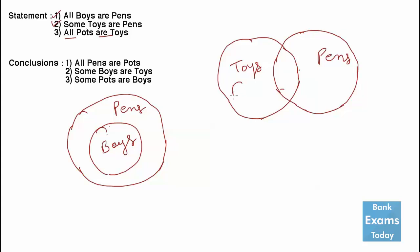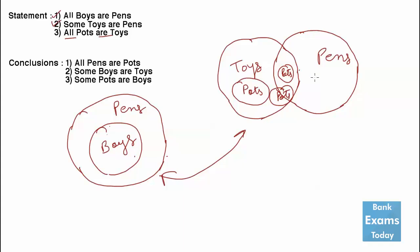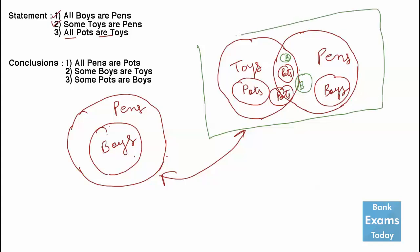The third statement: all pots are toys. So there is a possibility that the pot circle is here, or it can be here, or it can be like this. So we join these two diagrams — boys can be here, or the circle boys can be here, or it can overlap. This is the final integrated diagram for all three statements.